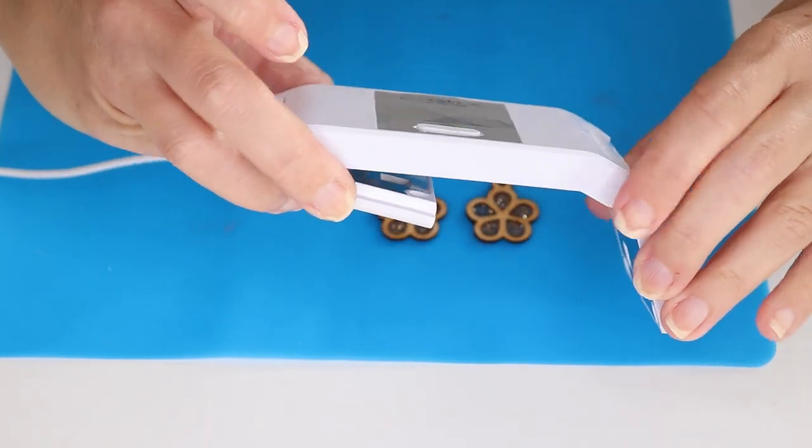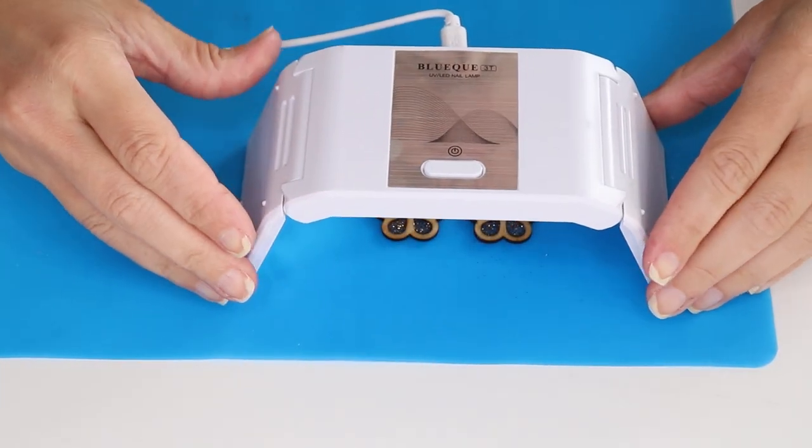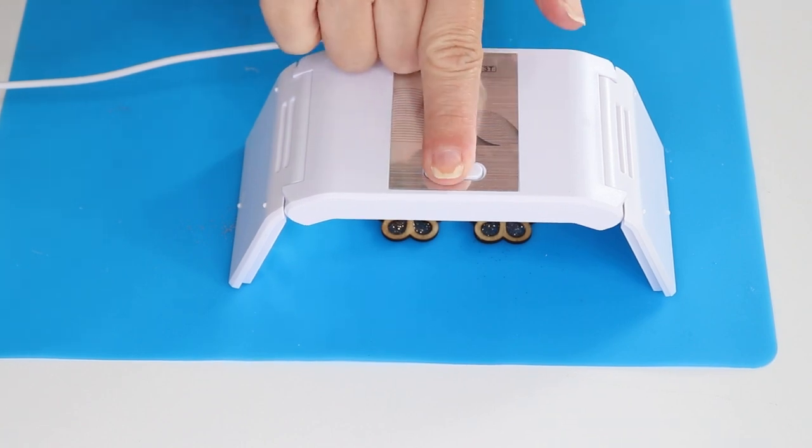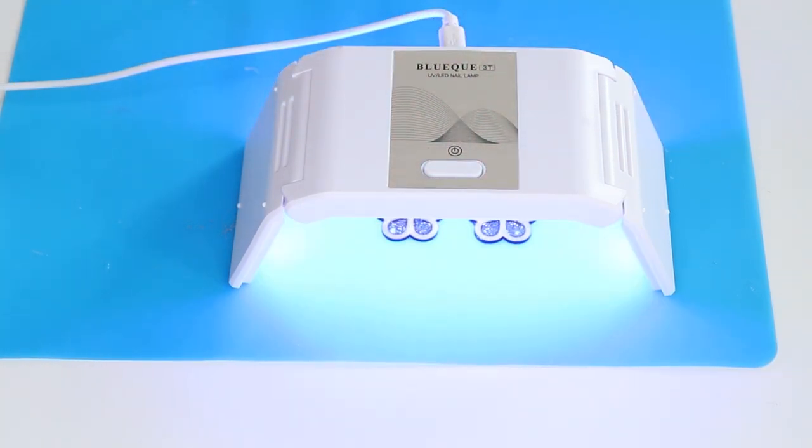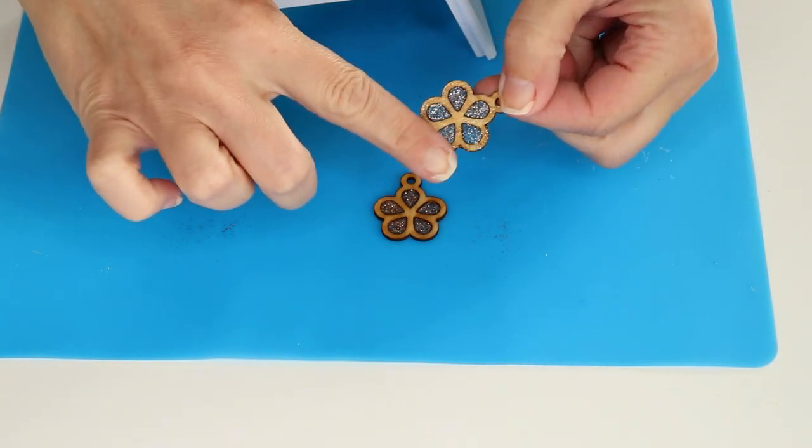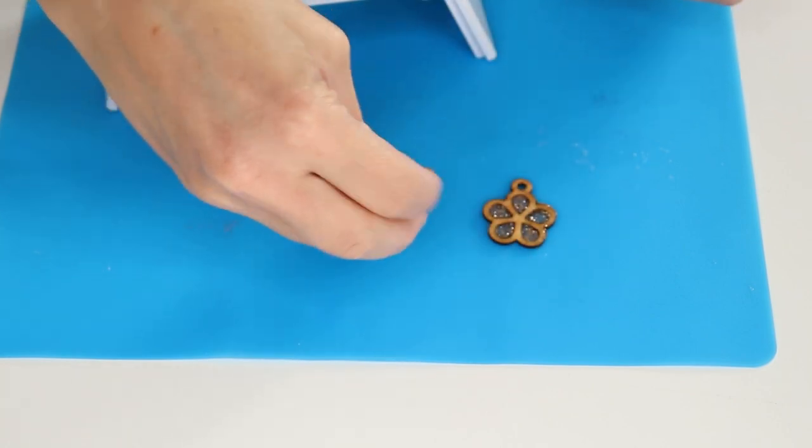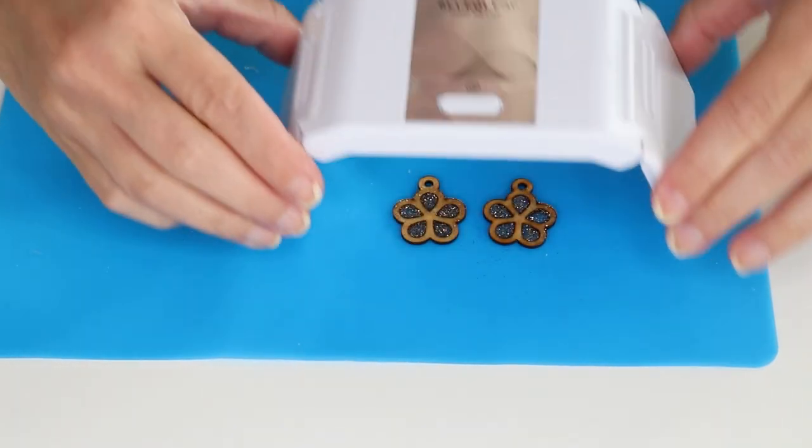With everything filled it's time to cure the resin. So we place the light over the top, push this button, and it's on an automatic timer. So we're just going to let it go. Depending on how thick your resin is you may need to flip these over and also cure it on the back side. If it is too thick or you've added too much glitter or too much coloring it won't cure all the way through. So try to keep a very thin layer when doing this.